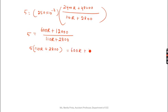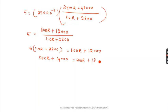From the cross-multiplied equation 5(110R + 2800) = 600R + 12000, you can now solve for R by expanding and rearranging to find the unknown resistance R.